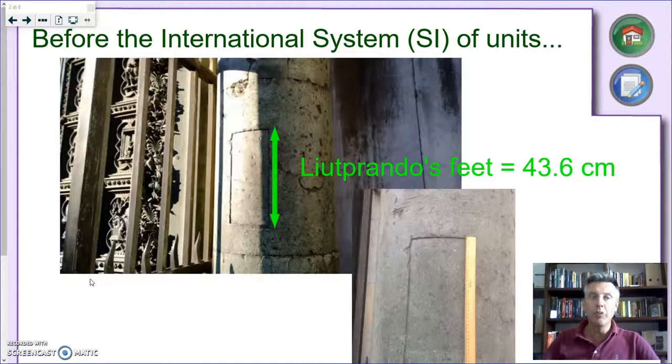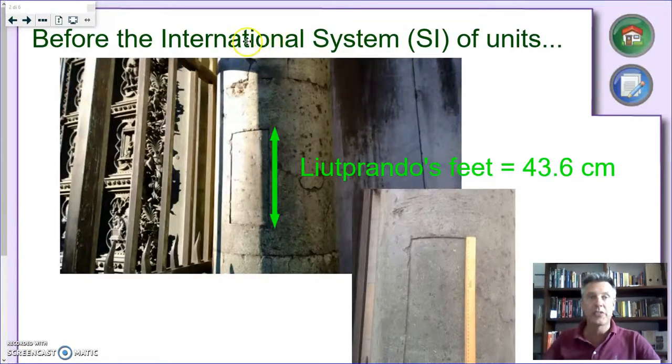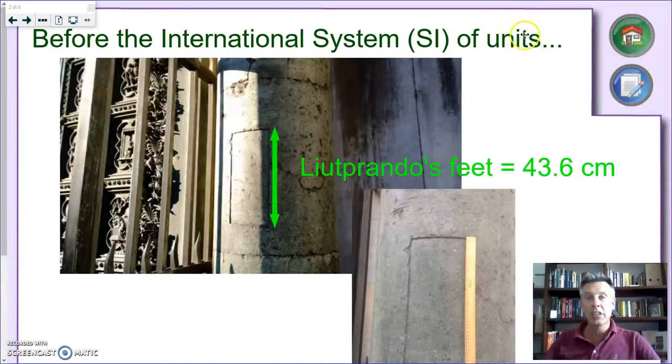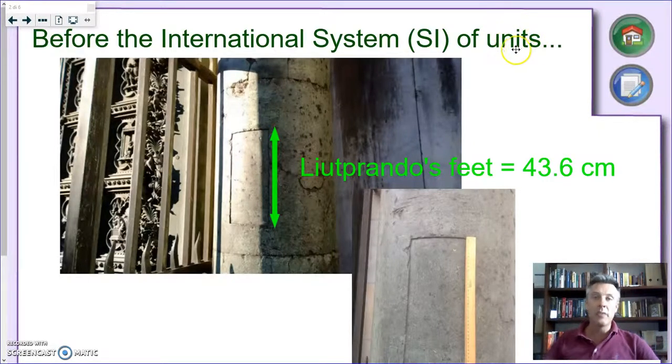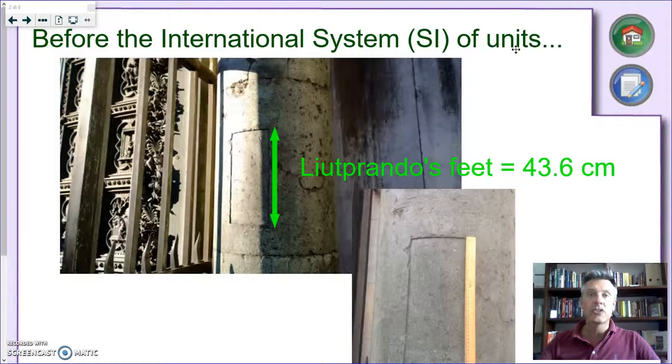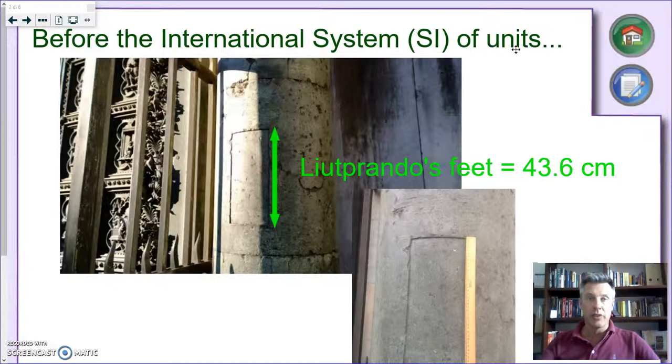Before the international system, that's what SI stands for, actually that's the acronym in French, every country, and actually more so, every district, every major town had its own sets of units. They had their own units for length, they had their own units for weight and so on. And that made trade, especially from a point of view of trade, very, very difficult.